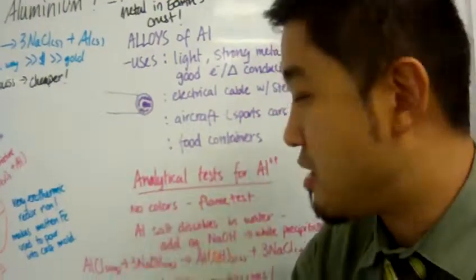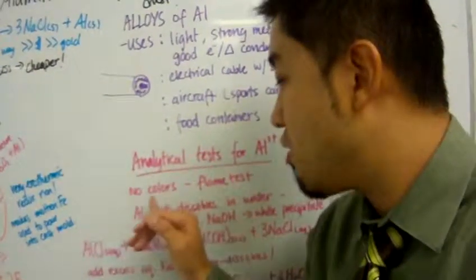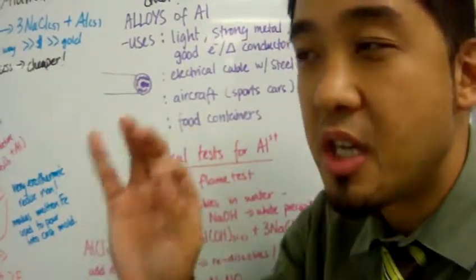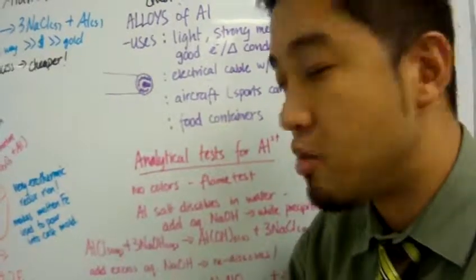Now for your cation test and your analytical test, you can detect aluminum because of its special properties. First of all, there's no real colors in the flame test. Why? It's because of the way the electrons are arranged in the orbitals, so we're not going to go into that.